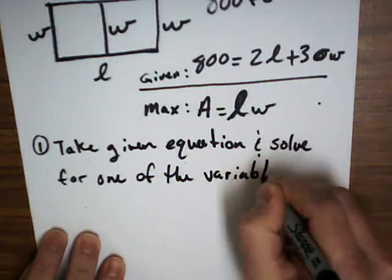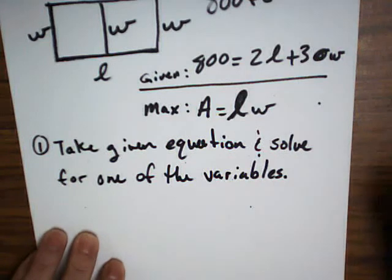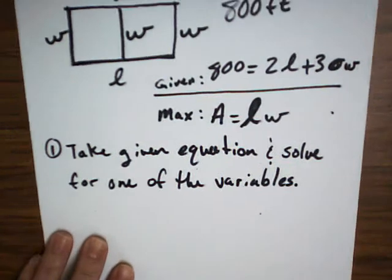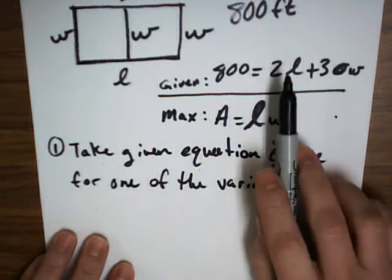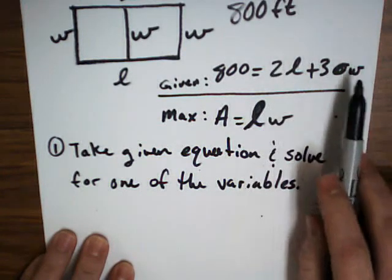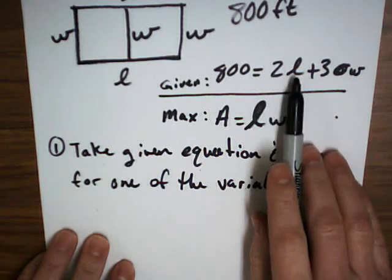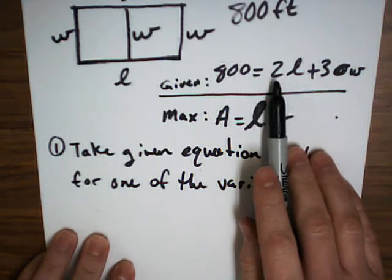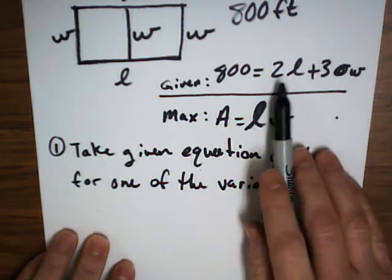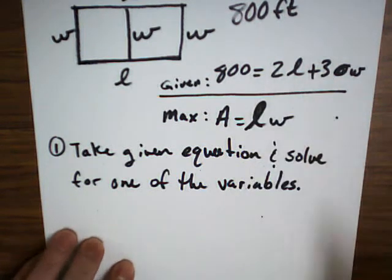You reckon it matters which one I pick? Which variable you pick? It don't. It don't matter. So, you pick which one you want. So, you tell me which one you want to try to pick. You want to try to pick the L, solve for L, or solve for W? I would like to solve for L because eventually I'm going to divide by 2. And dividing by 2 is a little bit easier. Halves are a lot easier than thirds.